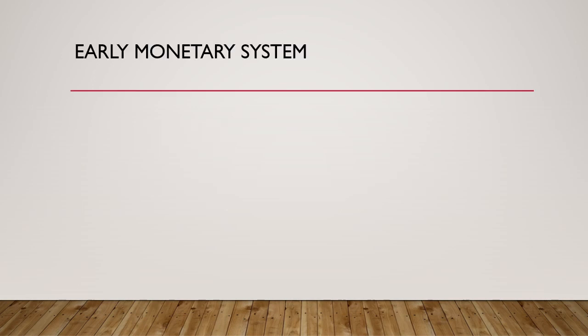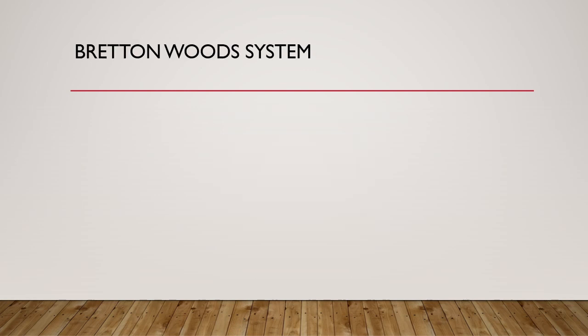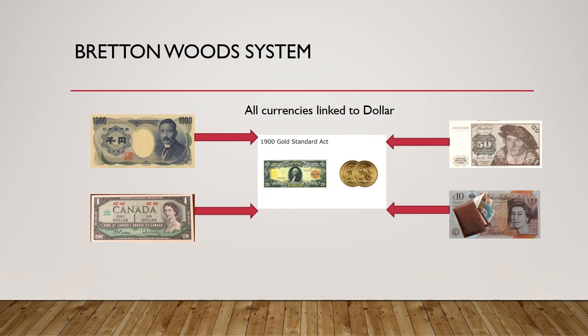Since the onset of civilization and the establishment of early monetary systems, we have been following some kind of commodity-based monetary system. The most popular among them was the gold standard. Later on came the Bretton Woods system, where all currencies were linked to the US dollar, and the US dollar itself was linked to gold.